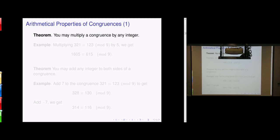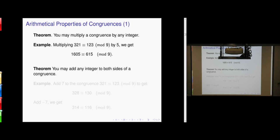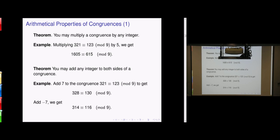You can treat a congruence almost like an equation. You can multiply both sides of a congruence by any integer — the result is still a congruence. Similarly, you can add any integer to both sides of a congruence. For example, if 321 is congruent to 123 modulo n, you can add seven on both sides to get a new congruence, or subtract seven — it's still a congruence.